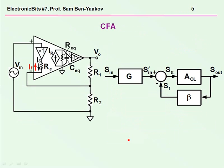Now, what happens with the current feedback amplifier? Again, we can use exactly the same block diagram as shown before. If you are unfamiliar with the block diagram, please go back to previous electronic bits, and it's explained there.